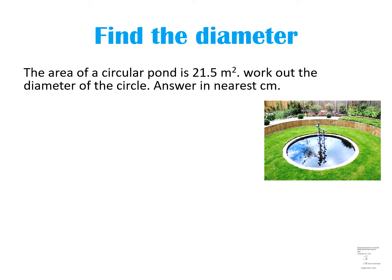Read the question clearly. The area of a circular pond is 21.5 meter square — because it is area, the area has been given. Work out the diameter of the circle and give the answer in the nearest centimeter. The area is given in meters but the answer we have to give in centimeters. So, how do we start?